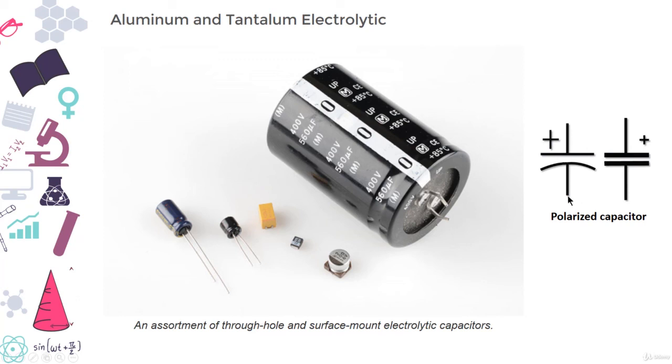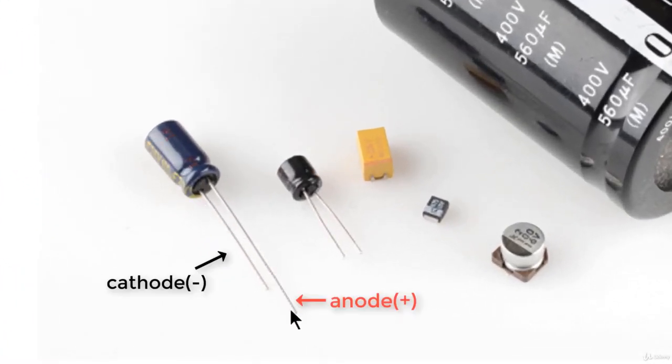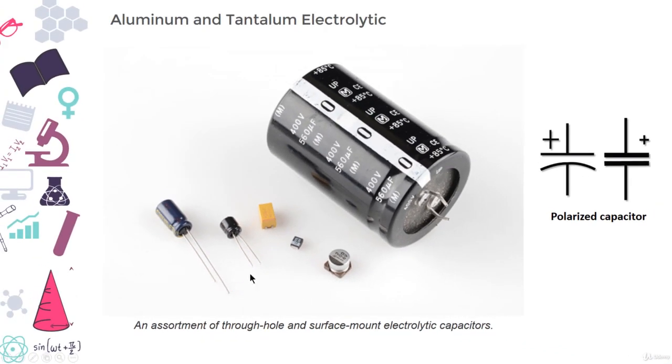The cathode of an electrolytic capacitor is usually identified with a minus marking and a colored strip on the case. Also, the lag of the anode might also be slightly longer, which is another indication. If voltage is applied in reverse on an electrolytic capacitor, they will blow up, so make sure you connect them in the correct way.